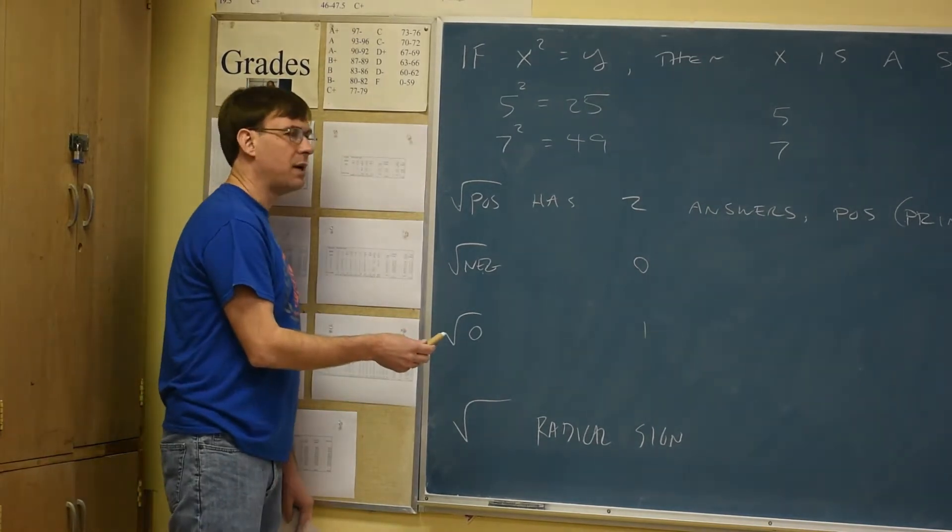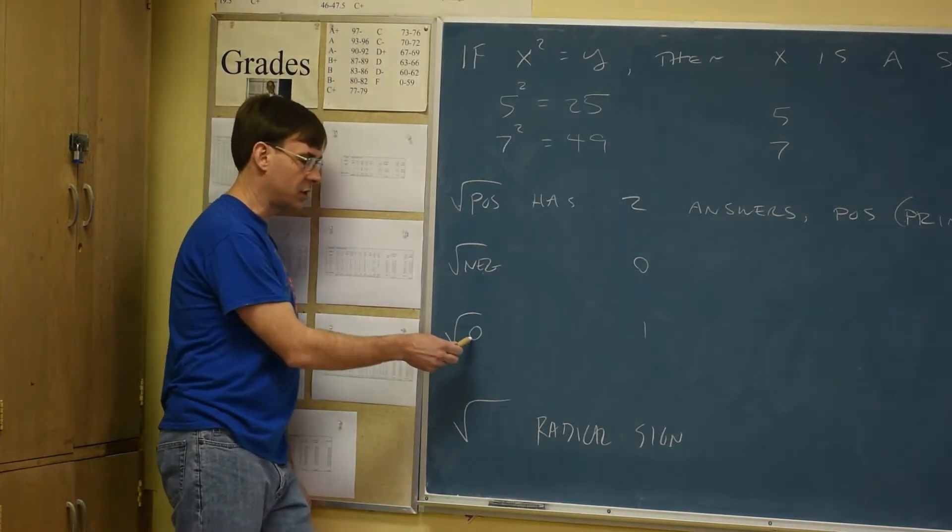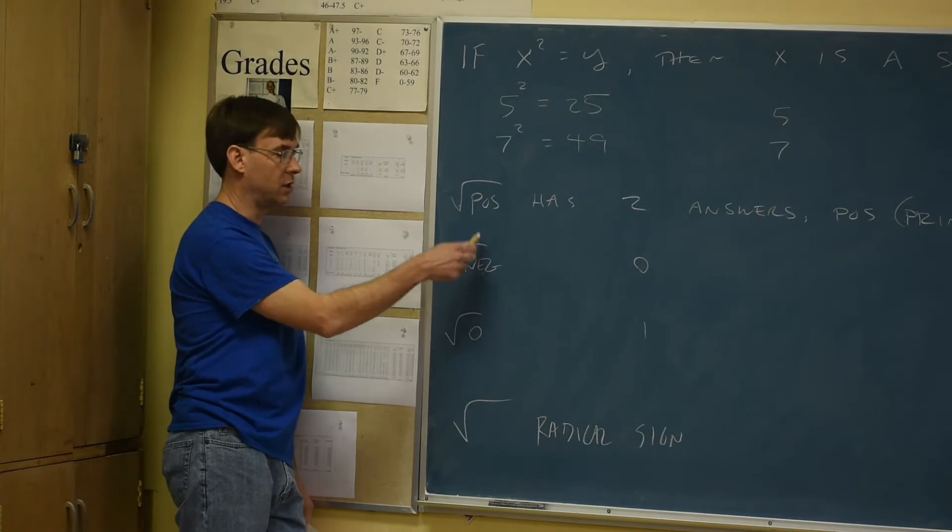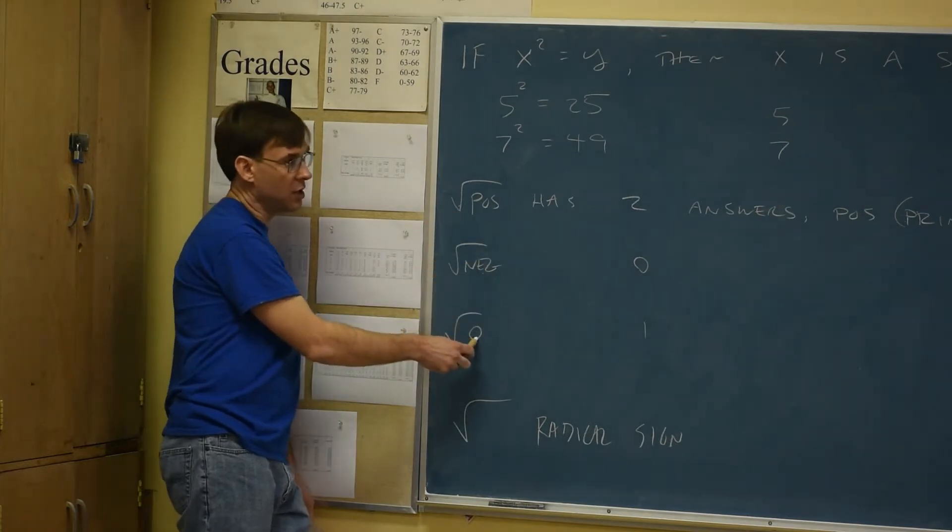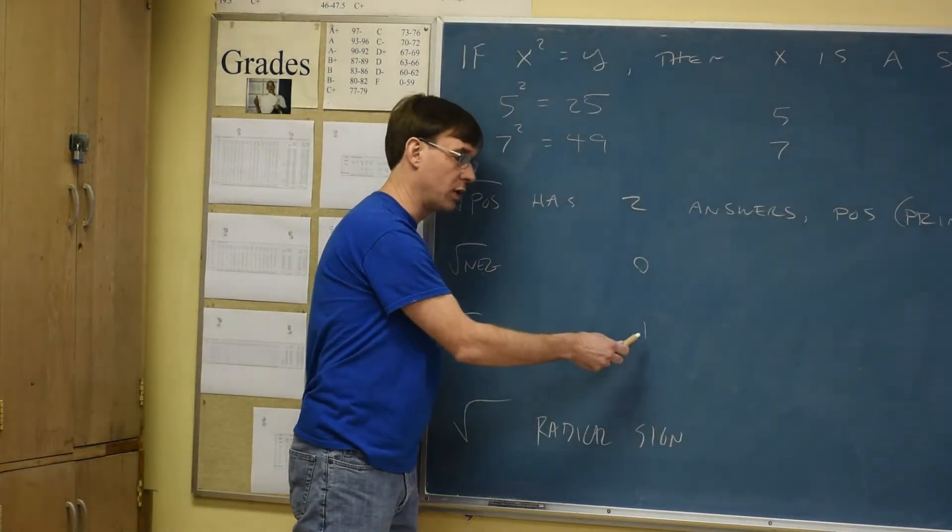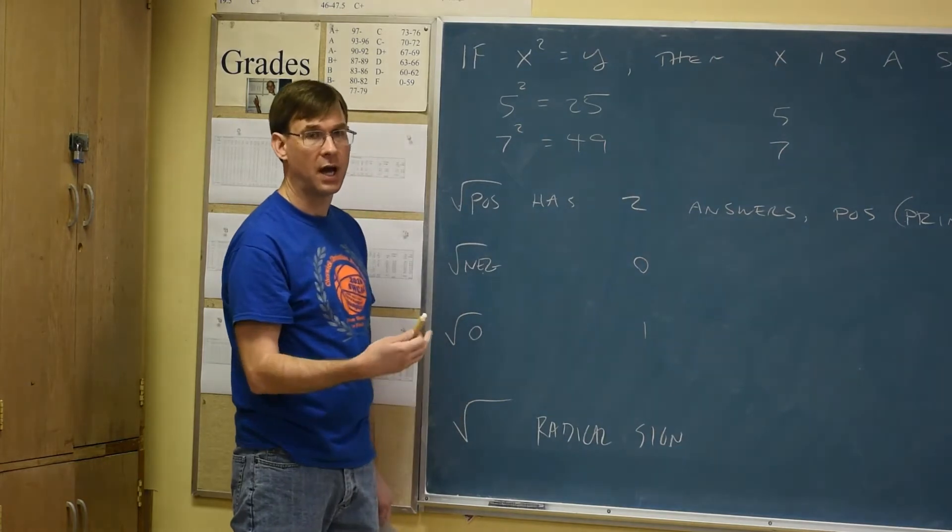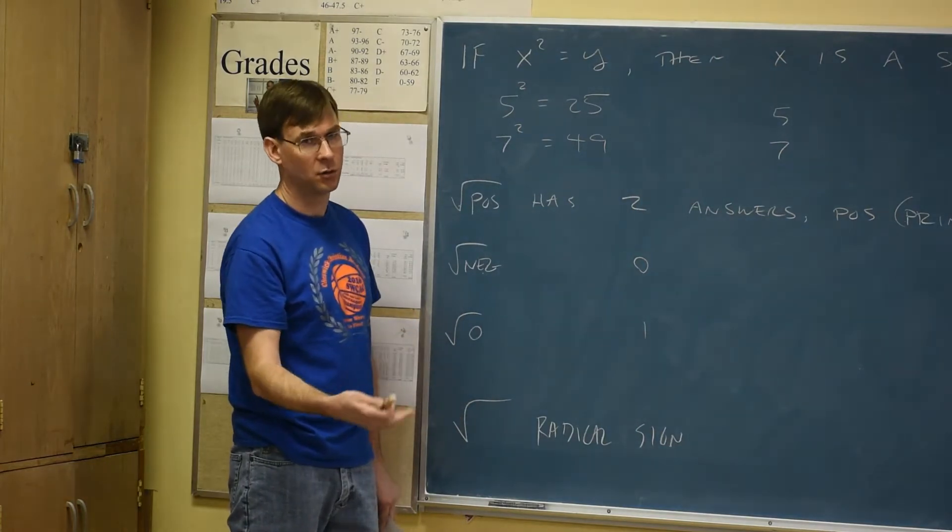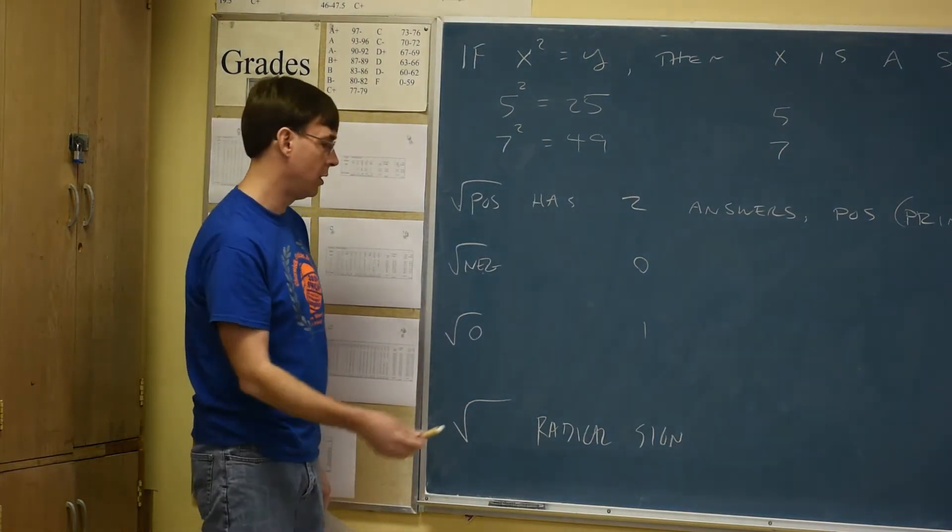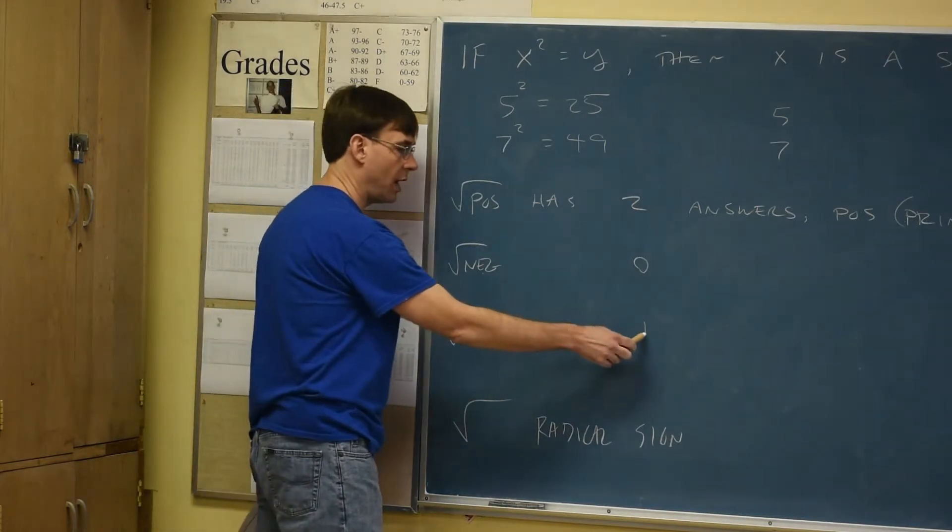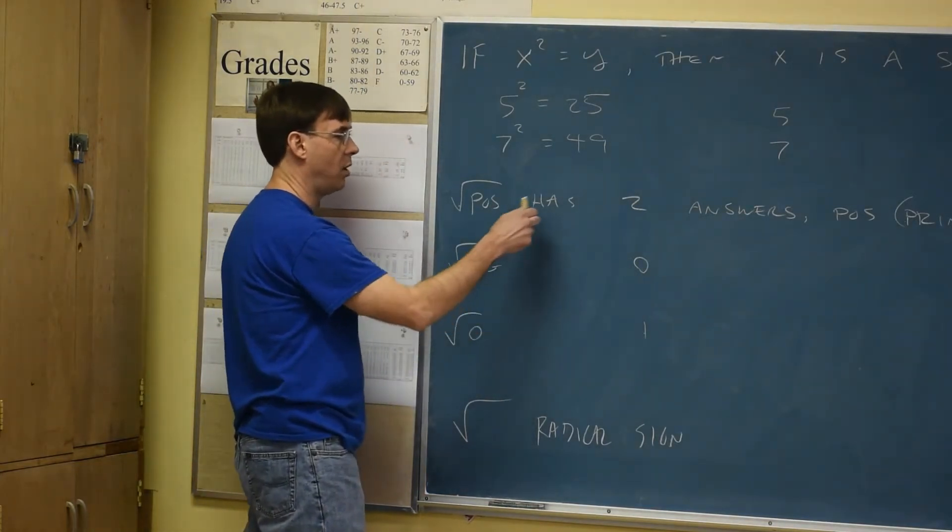And then not to be discriminating against zero. Zero is the only number that's not positive or a negative. The square root of zero only has one answer, which is zero itself. Zero times zero makes zero. So the square root of zero is also zero. Square root of zero gives you one answer. Negatives can't be done. Positives have two.